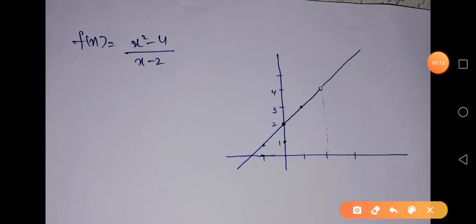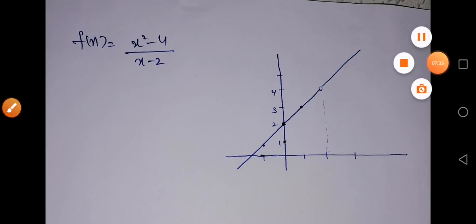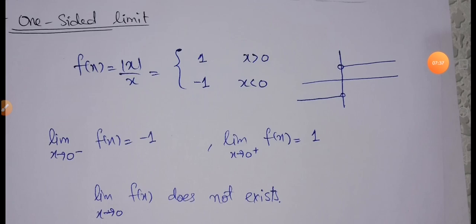Here is the graph of this function. There is a hole at x = 2 because that point is excluded from the domain. But we can still determine the limiting behavior, which approaches 4. We can verify this graphically: as x approaches 2 from the left, the graph approaches 4, and as x approaches 2 from the right, it also approaches 4.